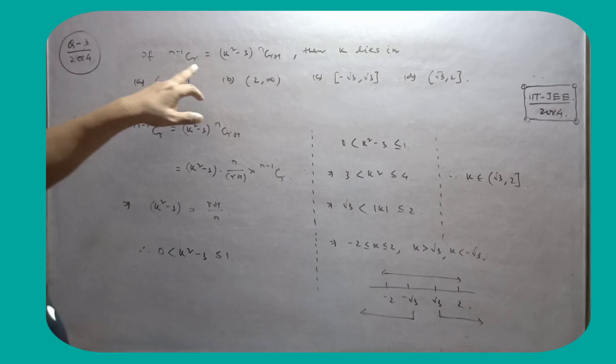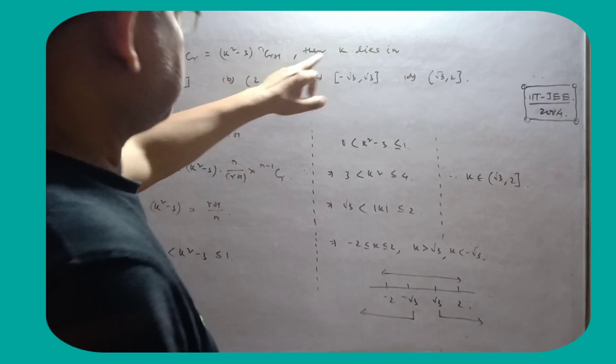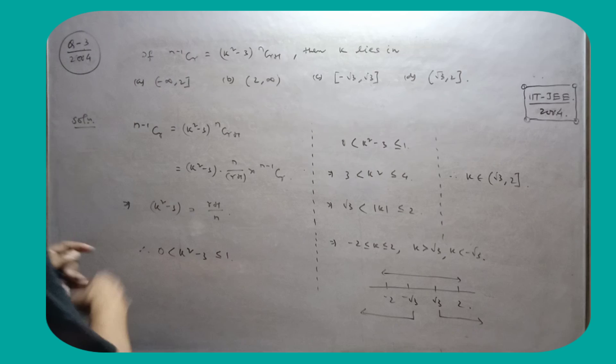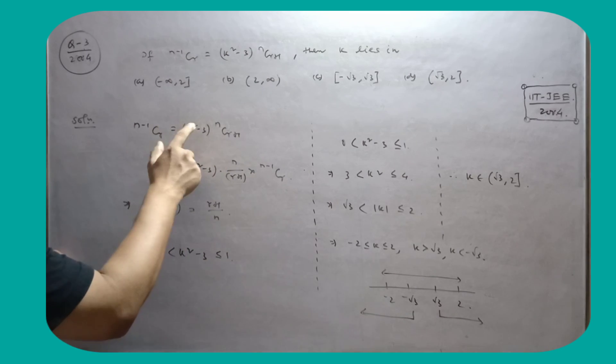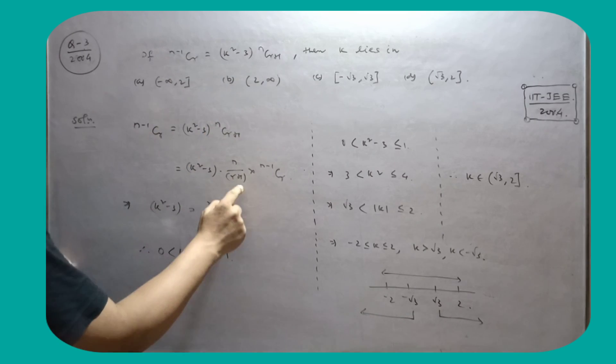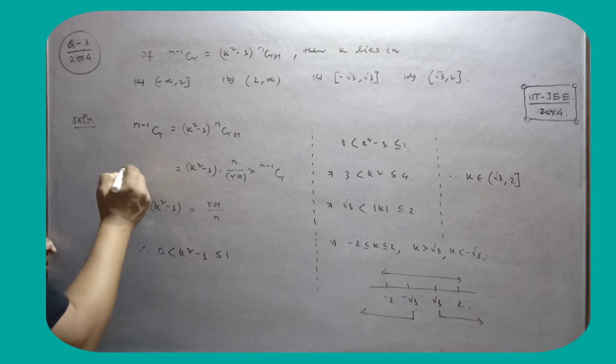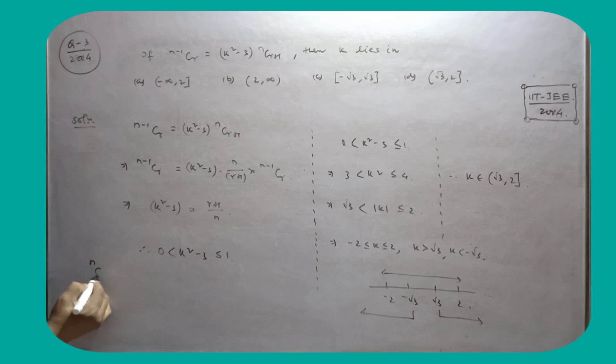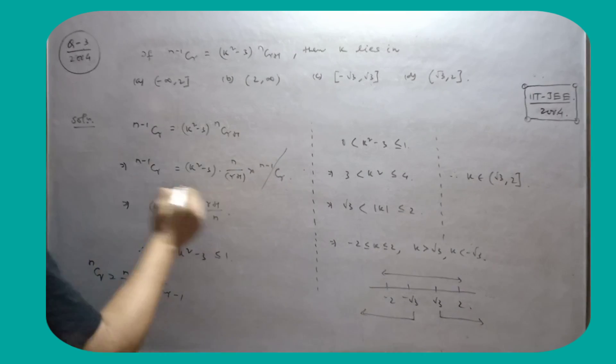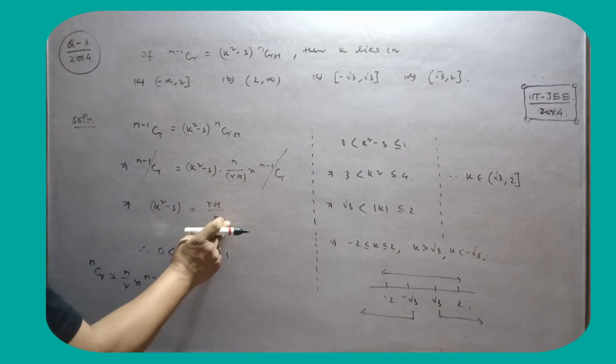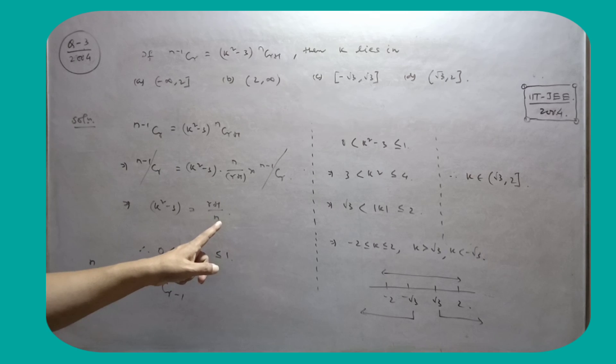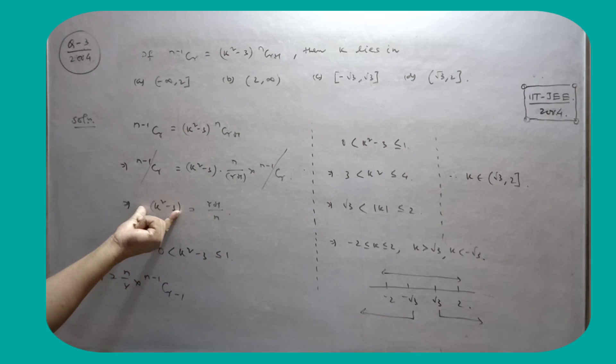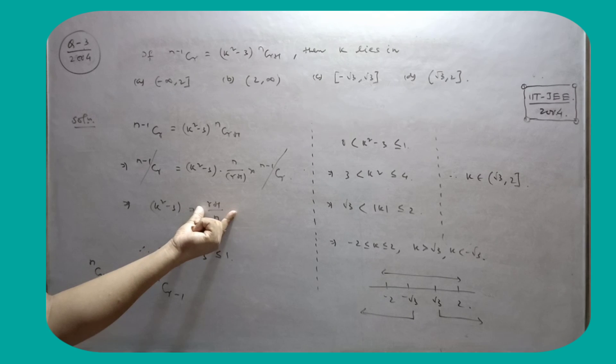If (n minus 1)Cr equal to k squared minus 3nC(r plus 1), then k lies in this. So write the formula here. That means this (n minus 1)Cr, apply the formula: nCr equal to (n by r)(n minus 1)C(r minus 1). Apply this for nC(k minus 3). What is the value of r plus 1 by n?